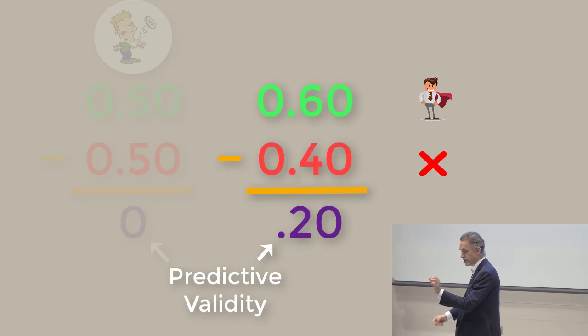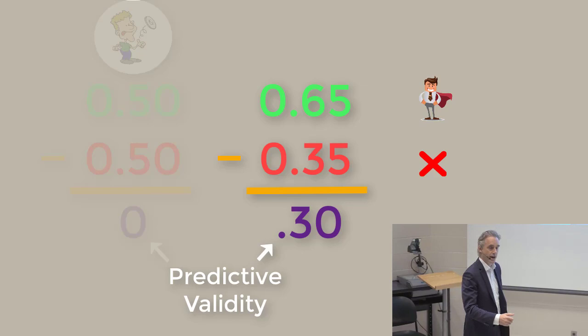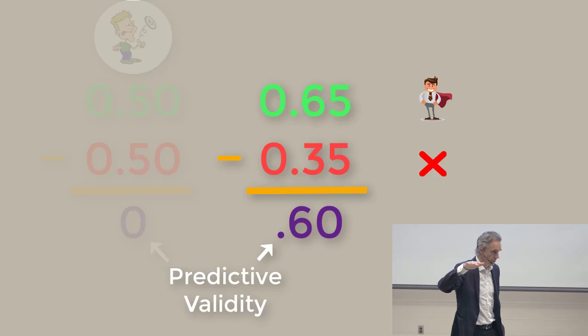So for example, if you have a 0.20 predictor, that gives you 60-40. If you have a 0.30 predictor, that gives you 65-35, because 0.65 minus 0.35 is 0.30. And if you have a 0.6 predictor, which is really up on the high end, right, you're really starting to push the limits of statistical prediction.